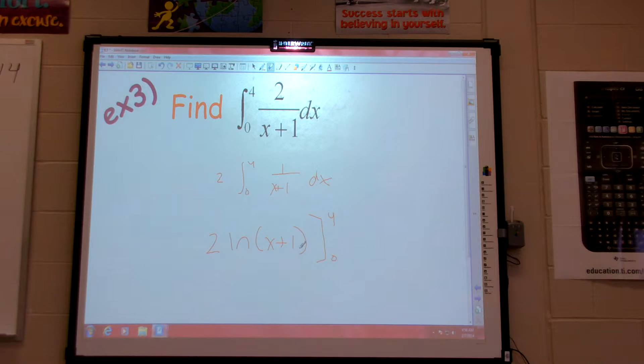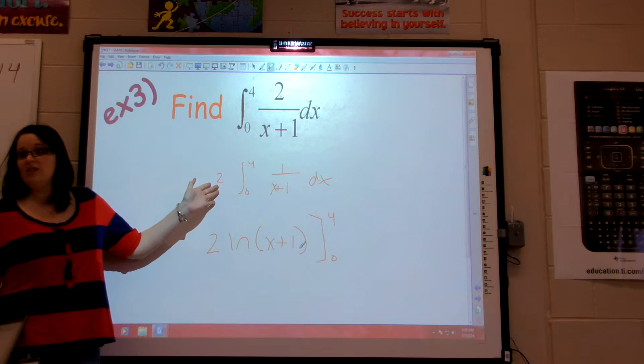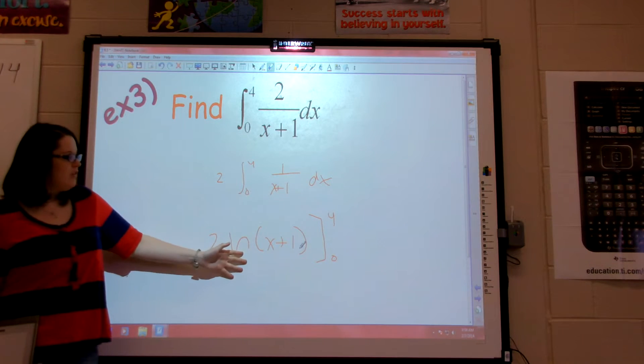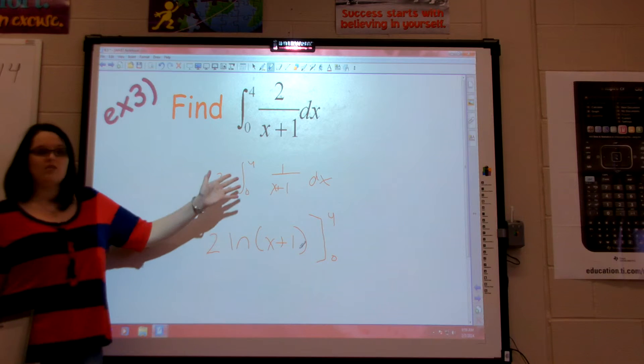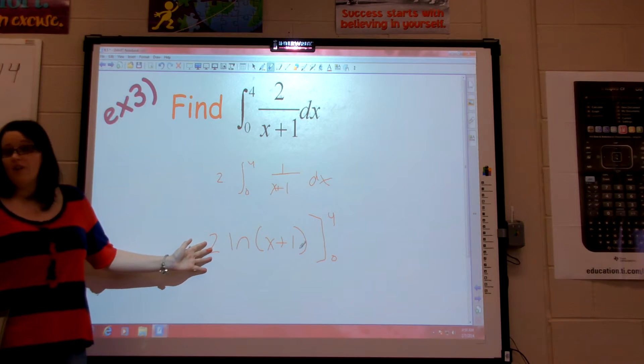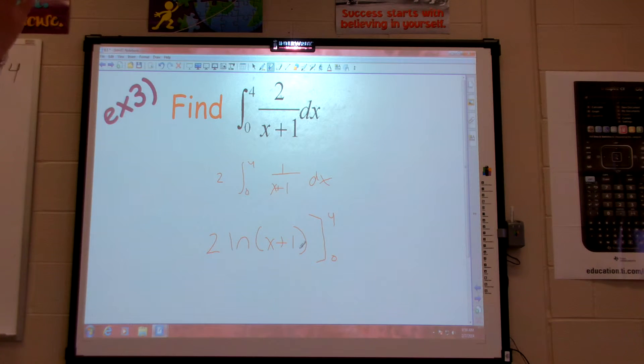But one key thing I want to emphasize is notation-wise. When we first start doing this, some people get confused. An integral means that's still little f of x. If I find the anti-derivative, there is no more integral. Because the integral is saying find the area under the curve. Here, I did find the area of the curve. I just need to evaluate it. Okay? No more integral once we take an anti-derivative.